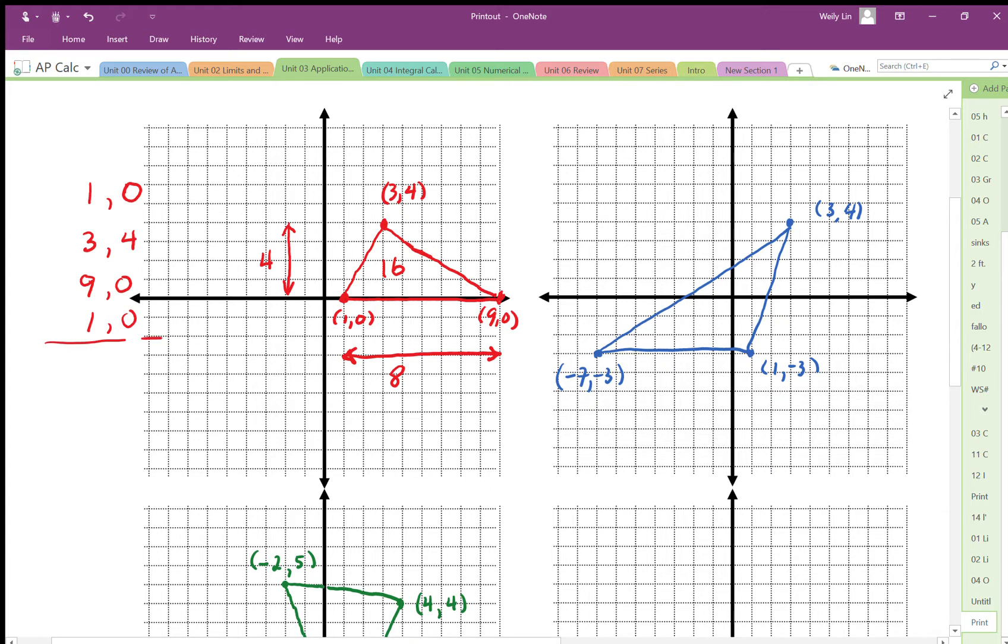And then what we do is we use this diagonal multiplication. We're just going to do 1 times 4, 3 times 0, 9 times 0, we're just going to add those all up. And then the other way we're just going to go 3 times 0, 9 times 4, and we get 1 times 0.